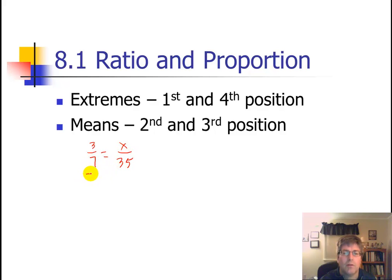So we can multiply the means and the extremes we'd get 7x equals 3 times 35. 7x equals 105. We can divide both sides by 7 and solve for x and x is 15. So we have solved that particular proportion.